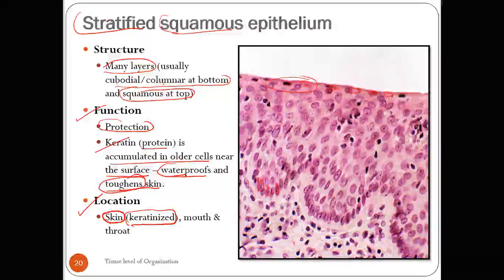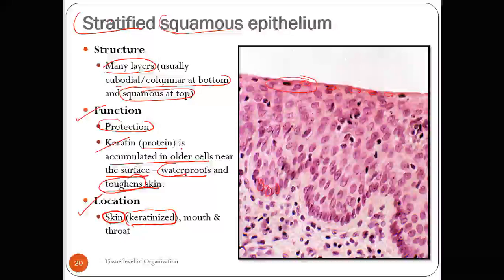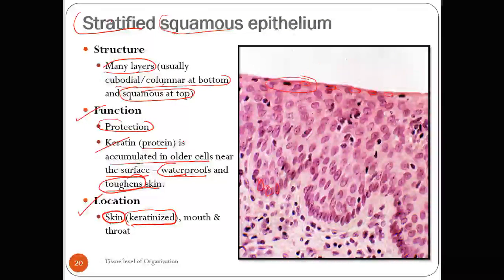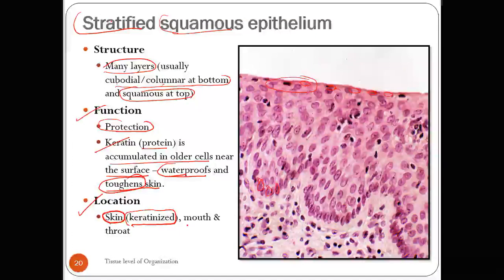Keratin accumulated in the outermost layer allows waterproofing and toughens the skin. Location: it is present in the skin (keratinized). When you bathe, water doesn't stay on your skin because the keratinized cells don't allow water absorption — otherwise you would gain weight after every bath. A second location is the mouth and throat (non-keratinized).